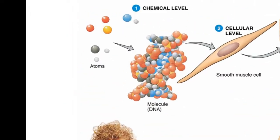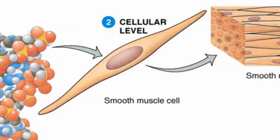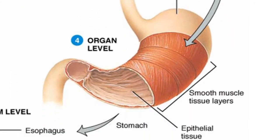You can see in this diagram the atoms and molecules, which collect to form cell organelles present inside a cell, like a smooth muscle cell. When these smooth muscle cells group together they will form smooth muscle tissue, which together with connective tissue, neural tissue, and other kinds of tissue